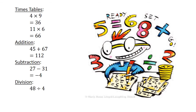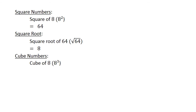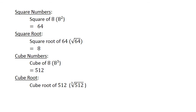Division: 48 divided by 4 equals 12. Square numbers: the square of 8 equals 64. The square root of 64 equals 8. The cube of 8 equals 512, and the cube root of 512 equals 8.